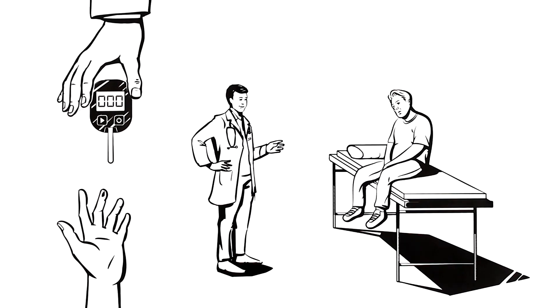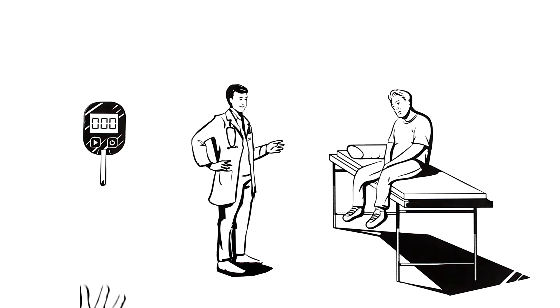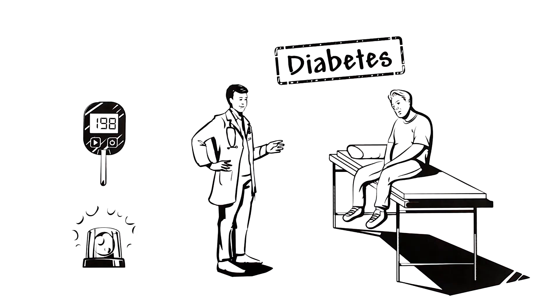The doctor had a hunch and tested Kaya's blood. His suspicions were right. Kaya's blood sugar level was way too high. He has diabetes.